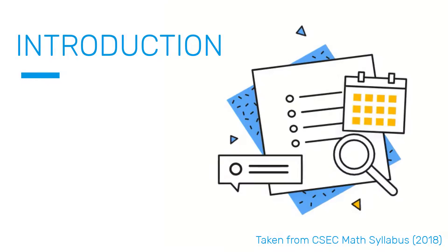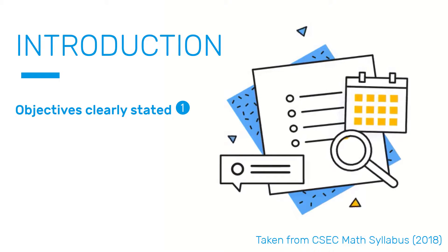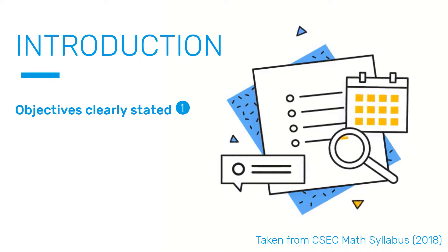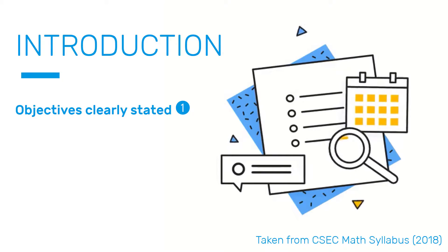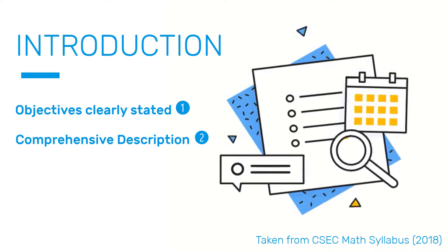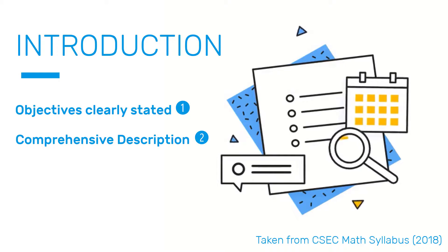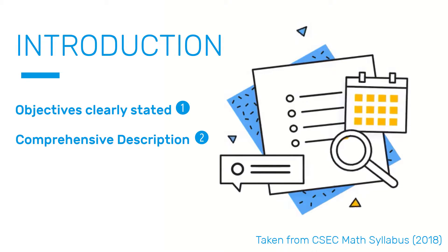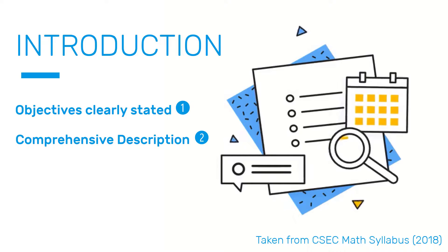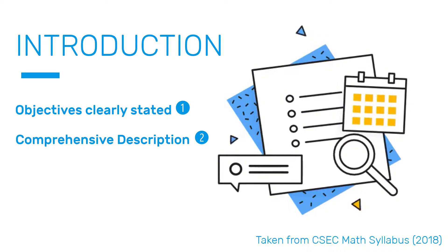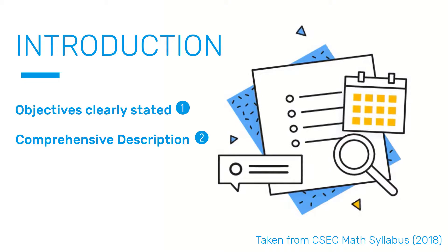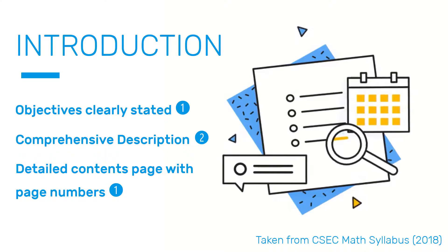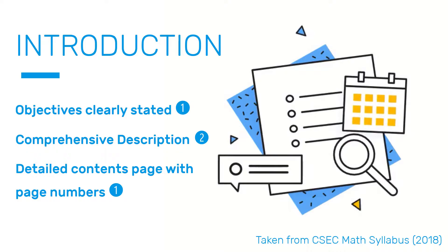The next four marks are in the introduction. You get one mark for your objectives clearly stated — that is, you outline exactly what you plan to achieve in this SBA. You get two marks for a comprehensive or detailed description, meaning your description tries to cover all that it can in a concise way. And you get one mark for your table of contents with page numbers — make sure you don't miss out on that one.